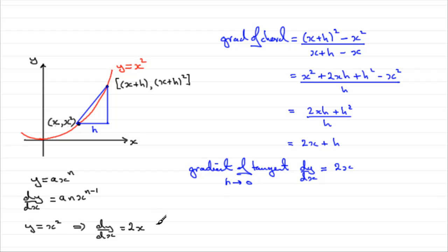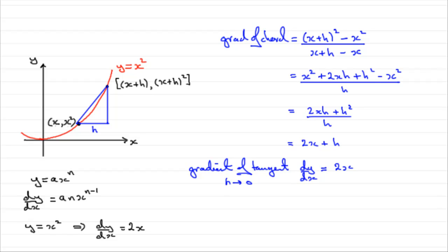What I'd encourage you to do is try this for curves like y equals x cubed. Take a general point on your curve: x and x cubed. The next point would be x + h and (x + h)³. Do (x + h)³ minus x³, all over (x + h) minus x, and see what you get. You'll find you end up with 3x squared. So you can build up this general result. I hope that's given you some idea of how we can differentiate from first principles, and I leave it up to you to experiment with further functions along these principles.